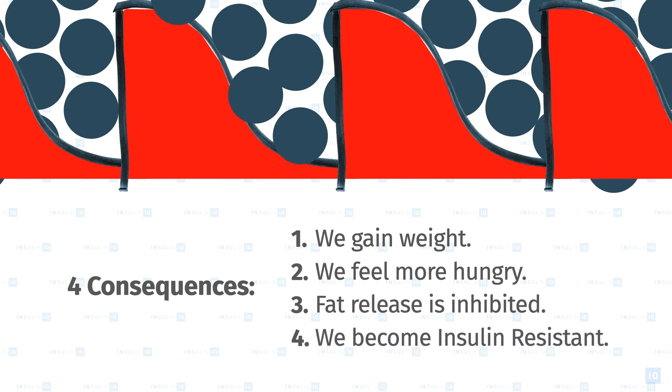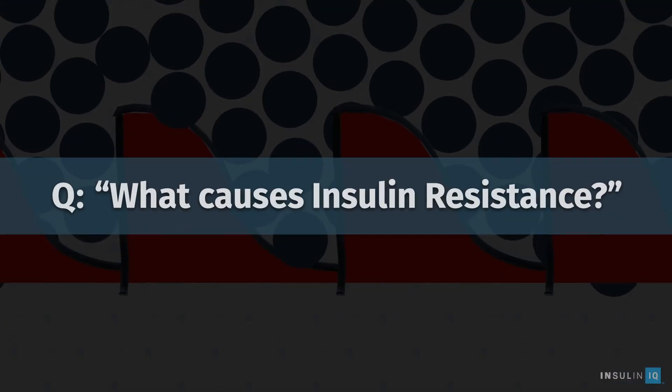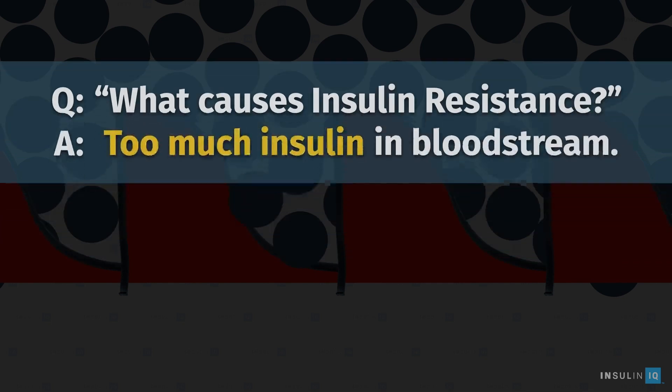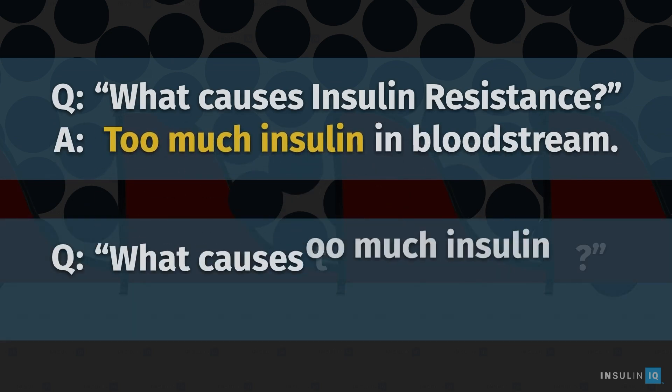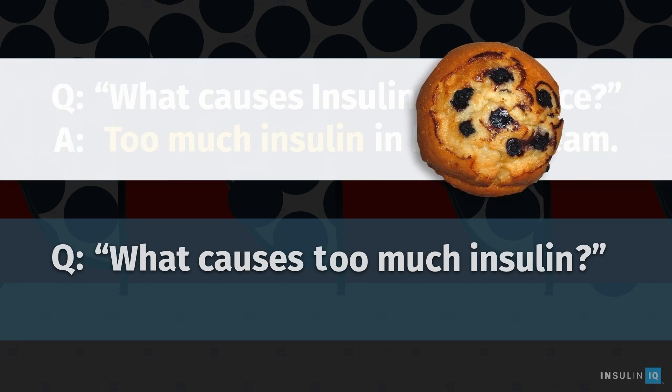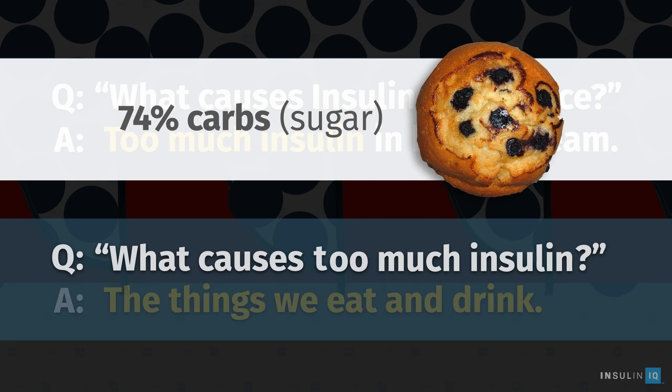So a quick review: what causes insulin resistance? The answer is there's too much insulin in the bloodstream. And the follow-up question: what causes too much insulin in the bloodstream? The answer lies in remembering the blueberry muffin with nearly 14 teaspoons of sugar—its nutritional makeup is three-fourths carbohydrates. Yes, this is primarily caused by the things we eat and drink.